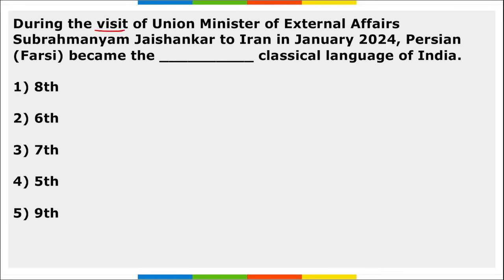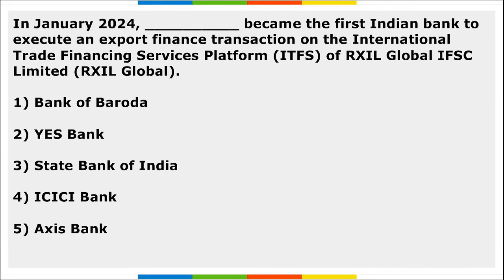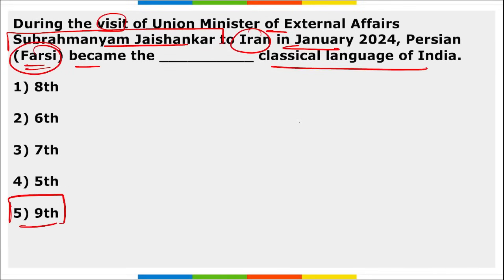During Union Minister of External Affairs Dr. S. Jaishankar's visit to Iran in January, Persian (Farsi) became the ninth classical language of India. Classical languages are also listed in the 8th Schedule.